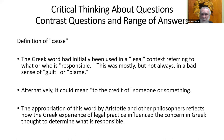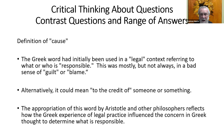The Greek word that Aristotle uses had previously been used in legal contexts referring to what or who is responsible — mostly in a bad sense of who's guilty or who's to blame, but alternatively meaning who should we credit, who's responsible for this good thing or beautiful work of art. The appropriation of this word by Aristotle and other philosophers reflects how the Greek experience of legal practice influenced the concern in Greek thought to determine what is responsible for things.